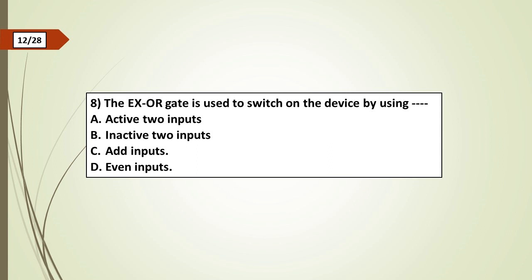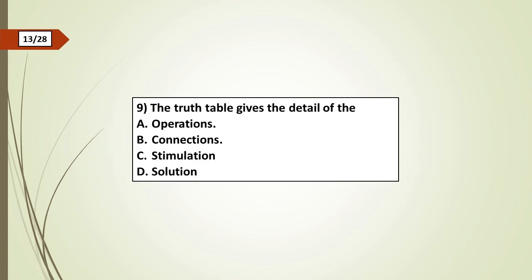Eighth question: The XOR gate is used to switch on the device by using dash: a) active two inputs, b) inactive two inputs, c) odd inputs, d) even inputs. Ninth question: The truth table gives the detail of the: a) operations, b) connections, c) simulation, d) solution.